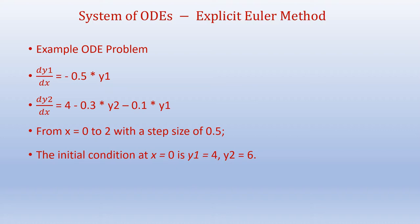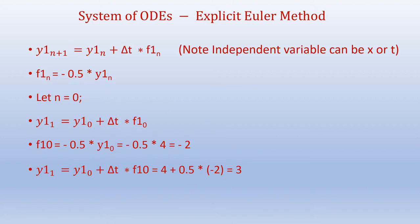The limits are x = 0 to x = 2, and we would like to use a step size of 0.5. The initial conditions at x = 0 are y1 = 4 and y2 = 6. We will try to do this manually using the explicit Euler method.